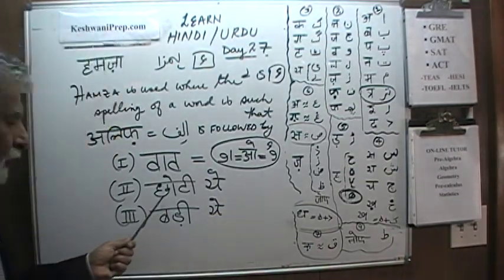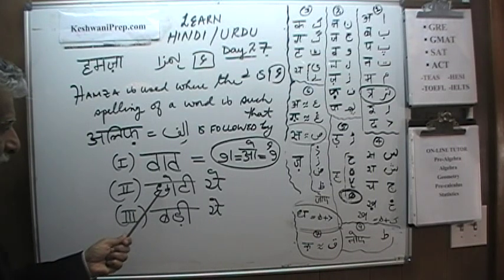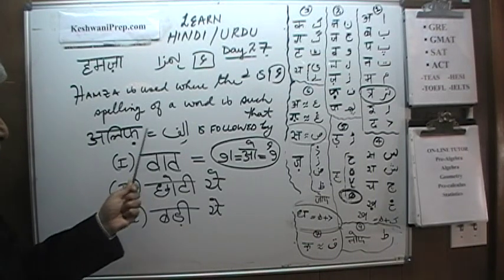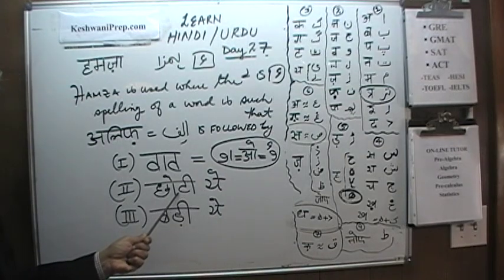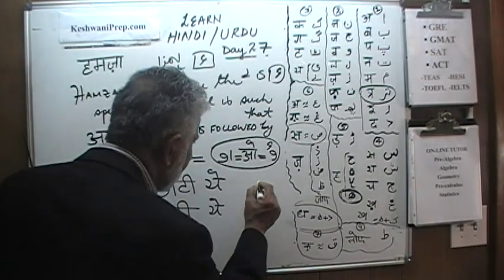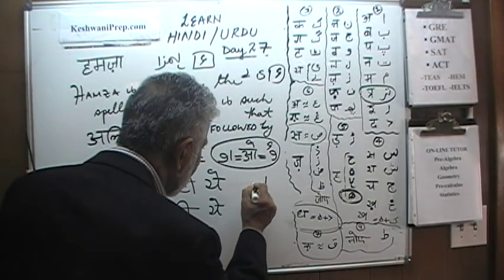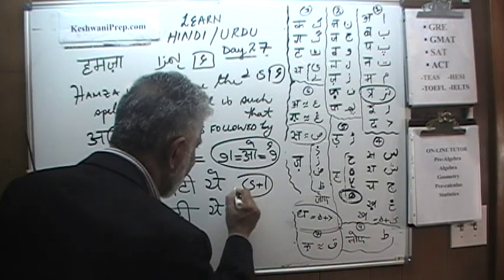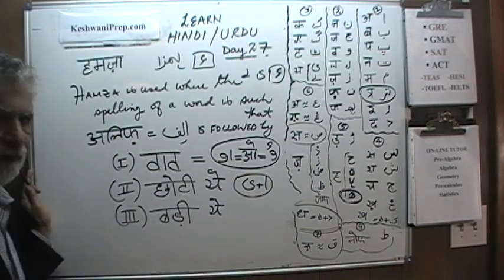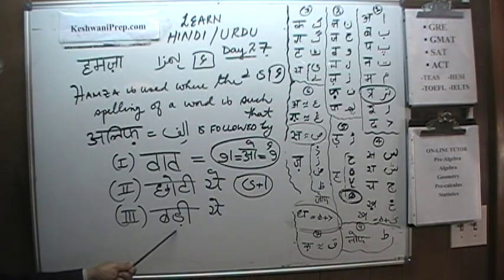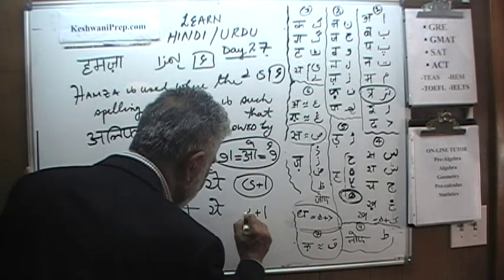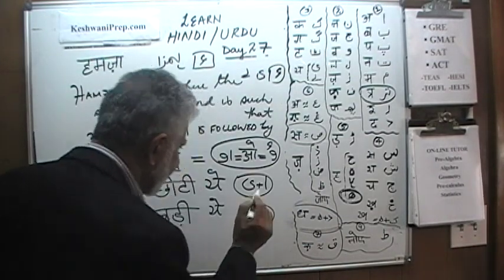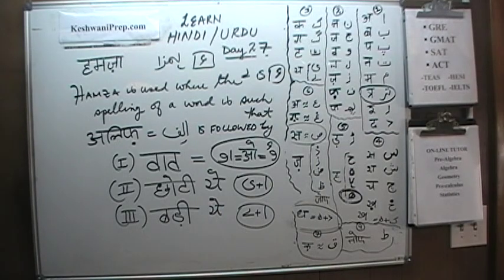Today we'll do the second case where Hamza is used — when Aleph is followed by Chhotiyeh. Tomorrow we'll do the situation where Aleph is followed by Badiyeh. Let's begin.